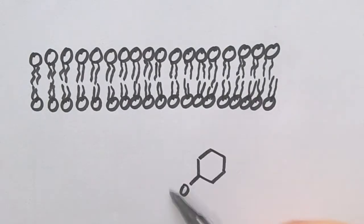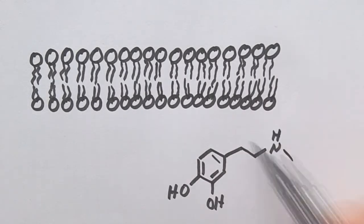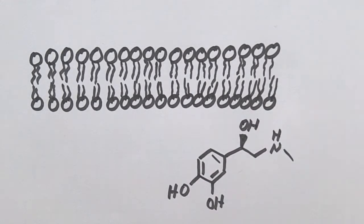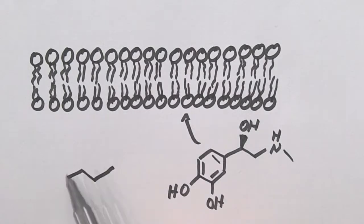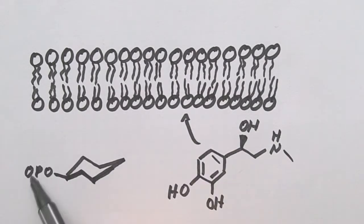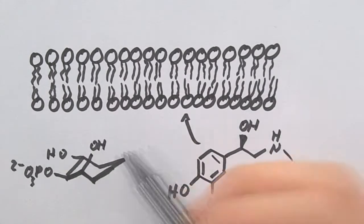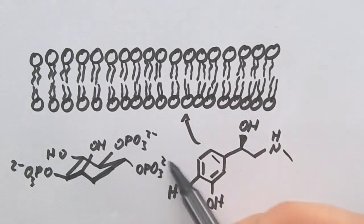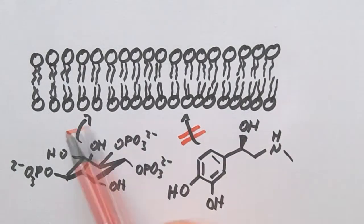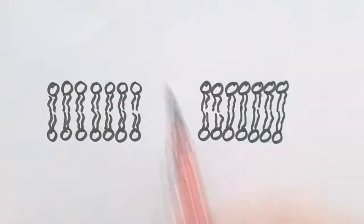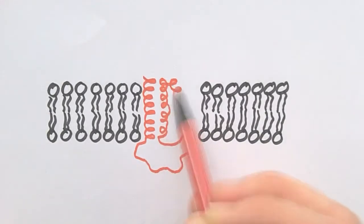The GPCRs serve an important purpose in the signal transduction in the cell. A whole lot of hormones and metabolites can't pass the cell membrane because of their size, charge, or hydrophilicity. So the cell needs a mechanism to pass the hormone signal through the cell membrane. At this point the GPCRs come into play.